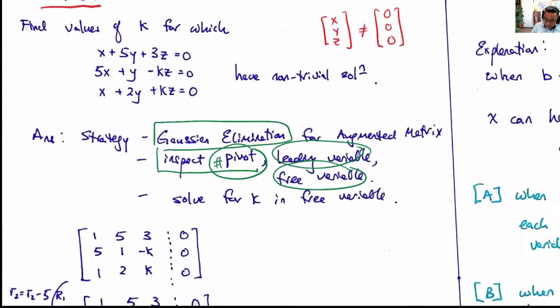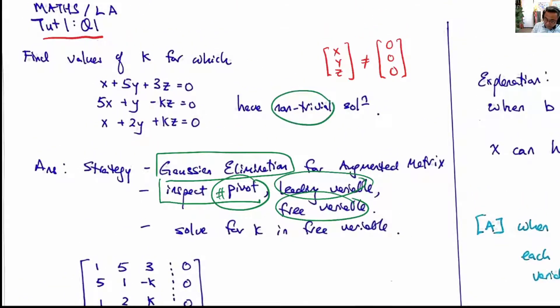And in this case, for this system of equations to have non-trivial solution, the number of pivots must be less than three because there are three variables.